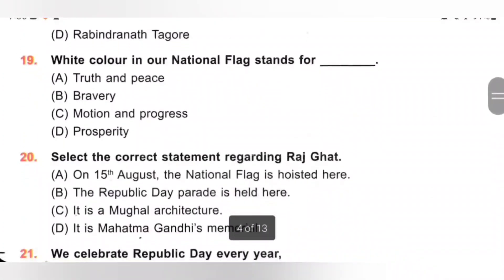19th. White colour in our national flag stands for: A. Truth and Peace, B. Bravery, C. Motion and Progress, D. Prosperity. In our national flag, the saffron colour stands for Bravery and Sacrifice, white stands for Truth and Peace, green stands for Prosperity, and the navy blue wheel stands for Motion and Progress. Option A, Truth and Peace, is the correct answer.